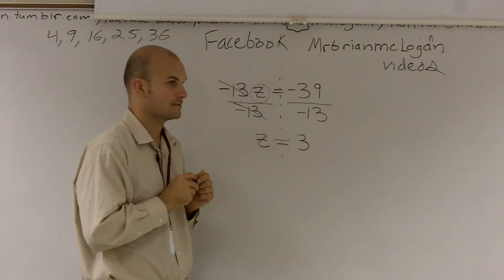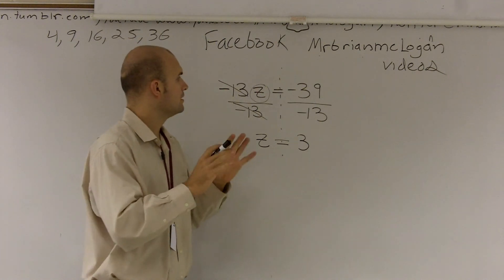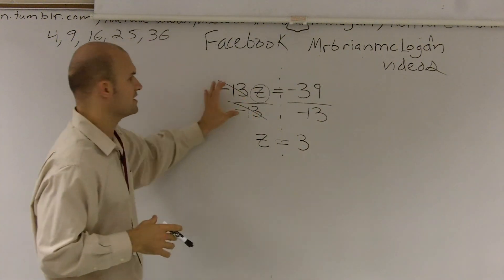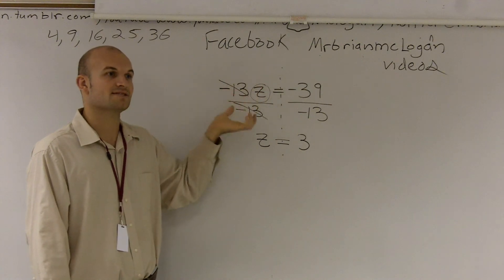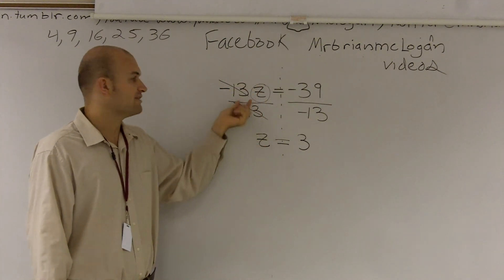I thought to cancel it out, you'd have to add 13 to negative 13. If it was, you always just got to think of what's happening to the variable. Here, we're multiplying, right? So to cancel it out, you're going to have to do the opposite, which would be division. But if we were adding 13,